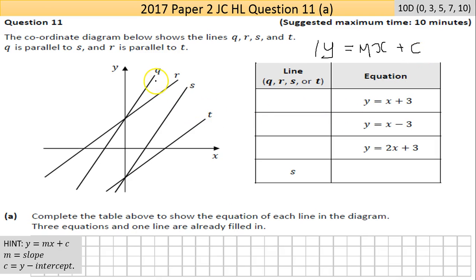First you can tell here is that with q and r they're crossing in the positive part of the y axis, so they have a plus value for the c. The s and t are crossing in the negative part of the y axis, so they have a negative c value. So you can tell here that this is either s or t.